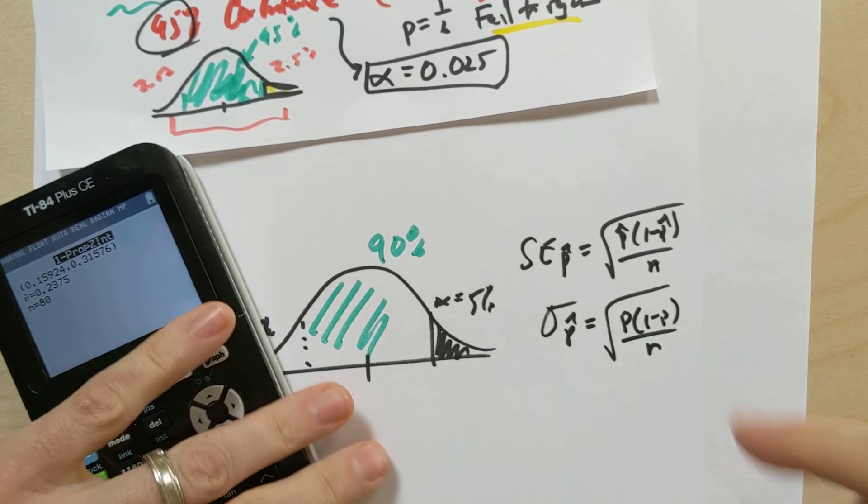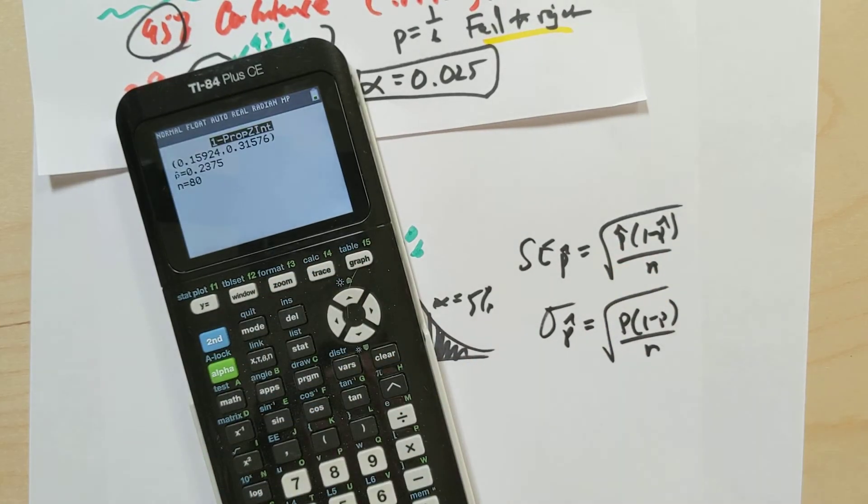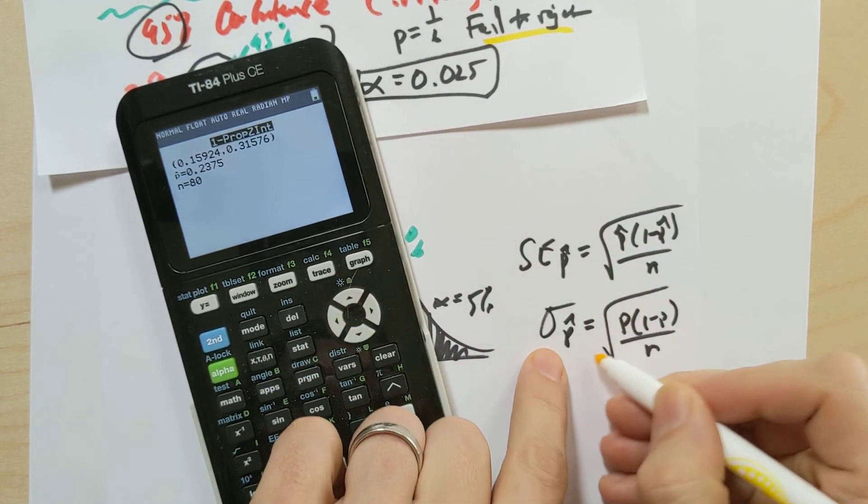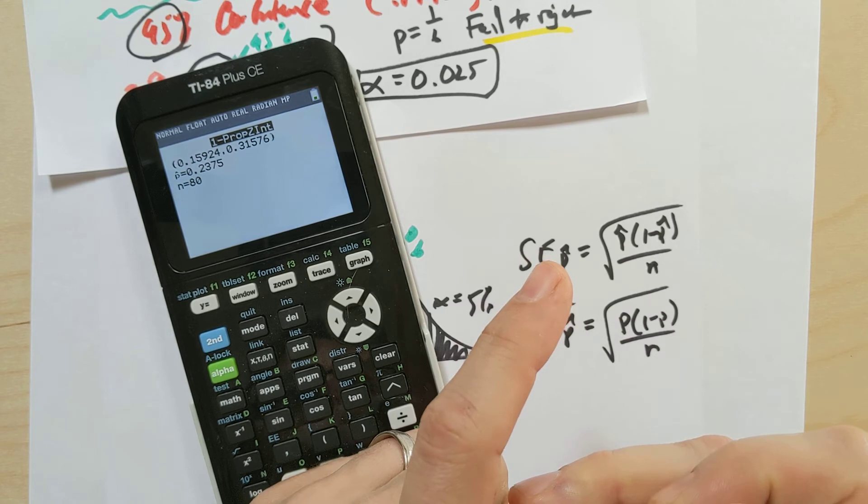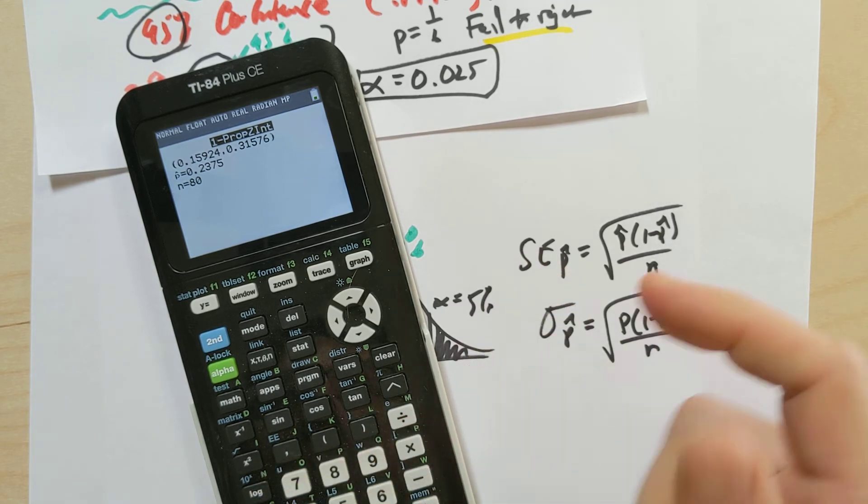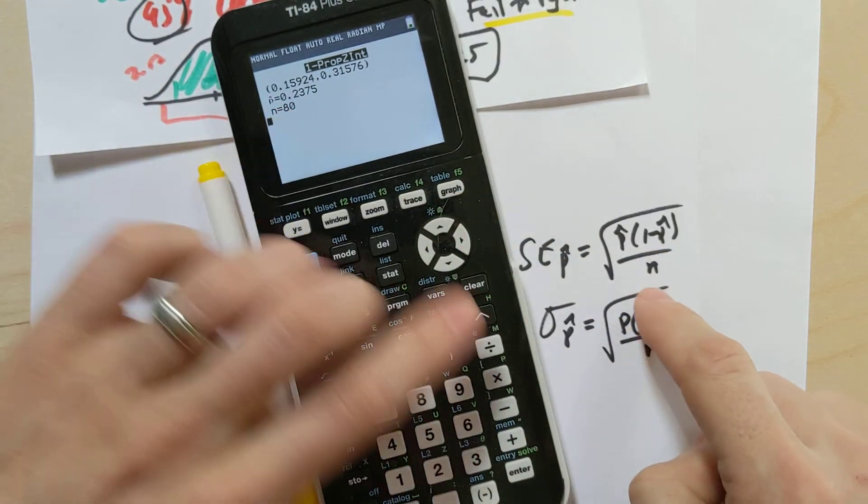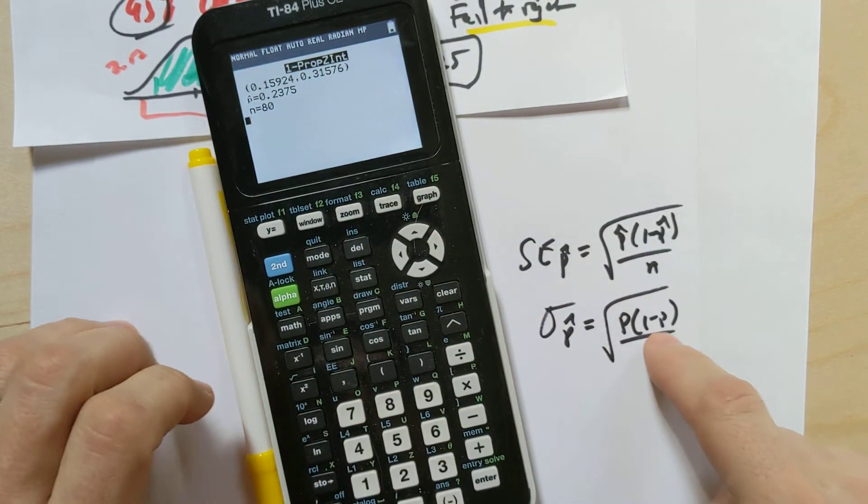there's going to be some discrepancy between the calculation we got with P hat and the calculation we got with P. And in this situation, then, we have to realize that sometimes things work out a little bit differently. Similarly, that this particular standard error is going to be larger than this.